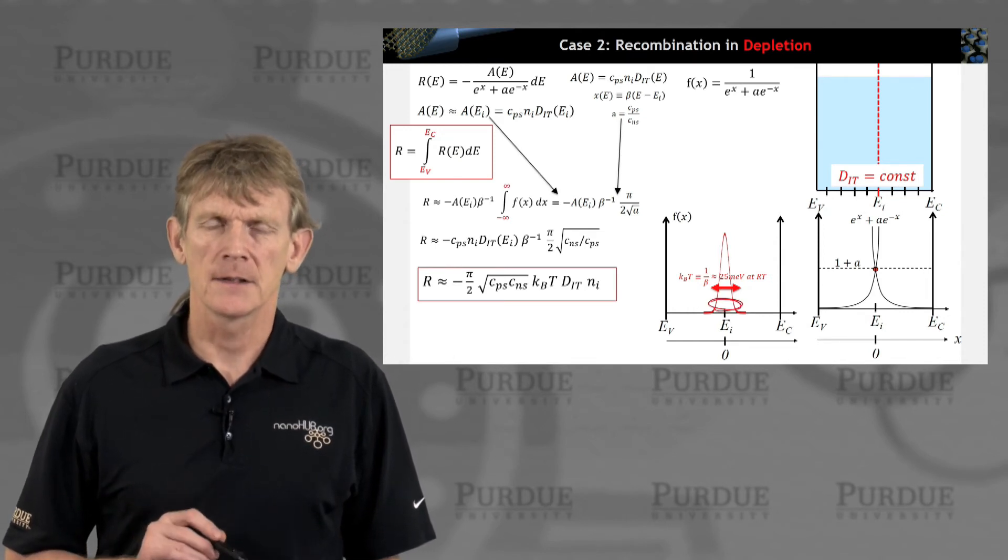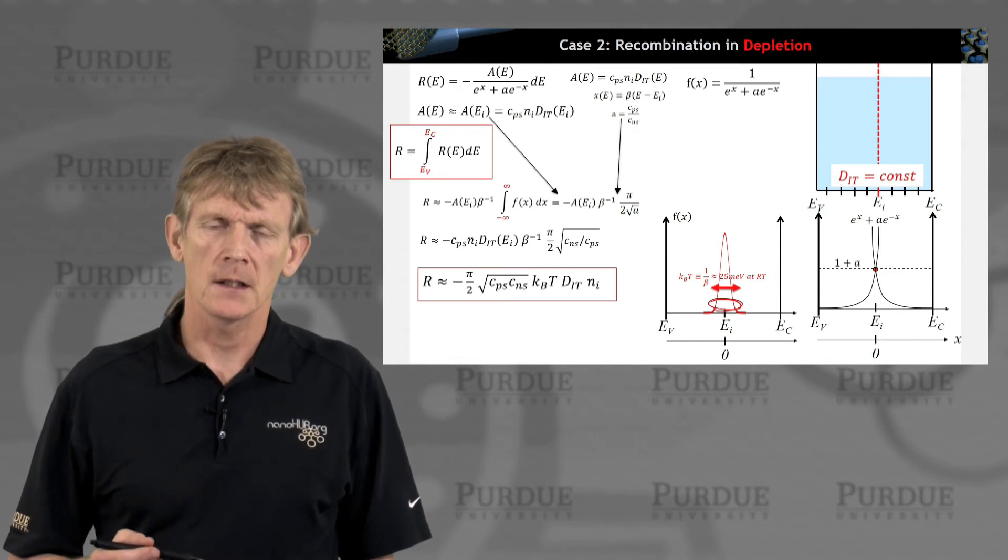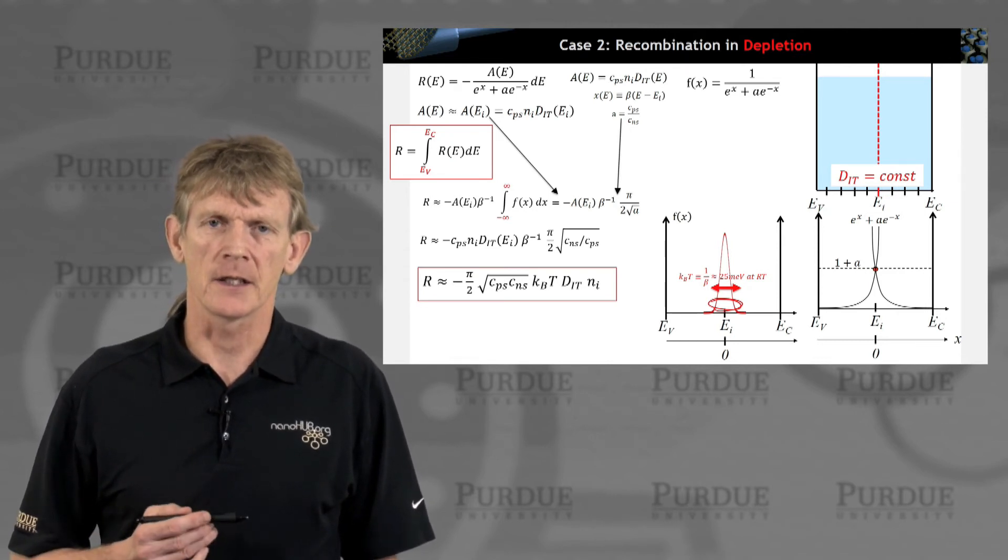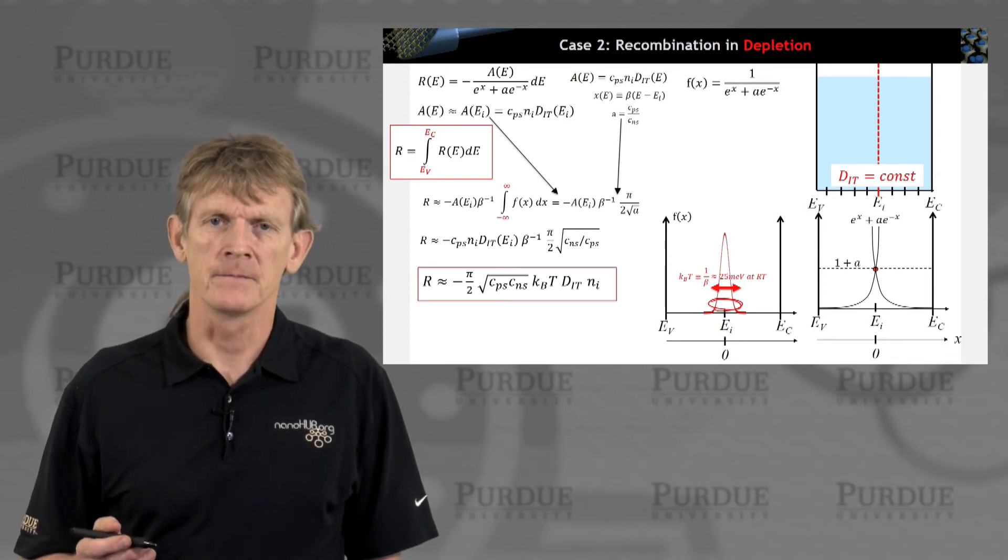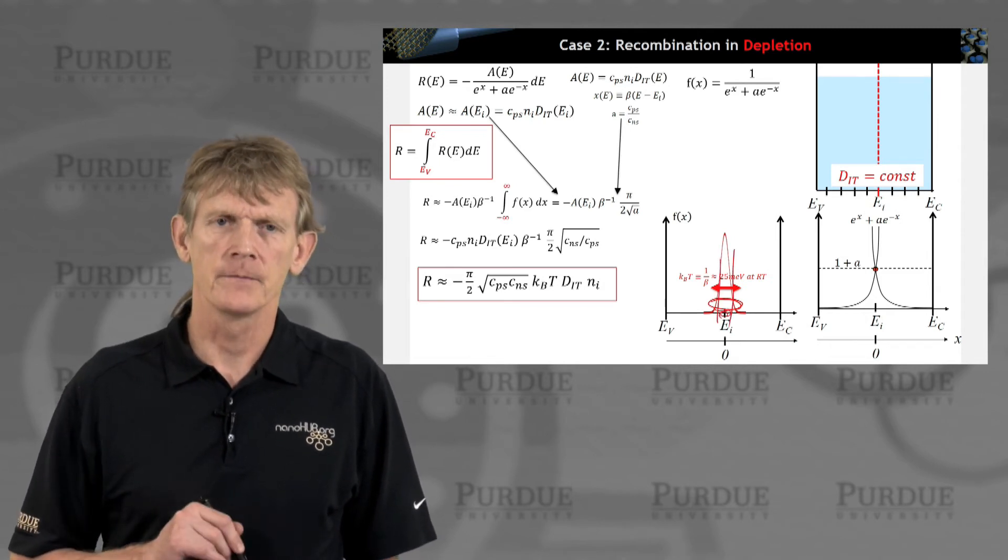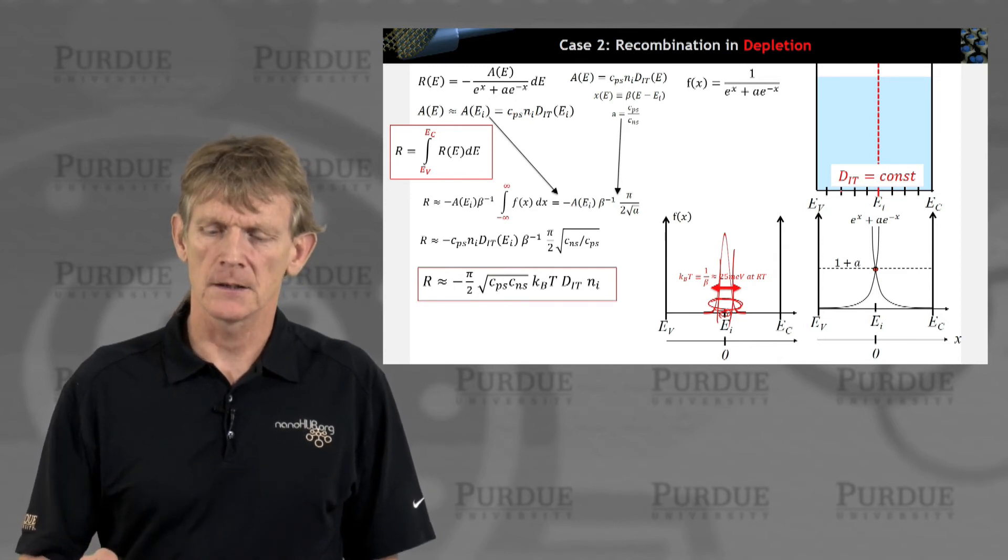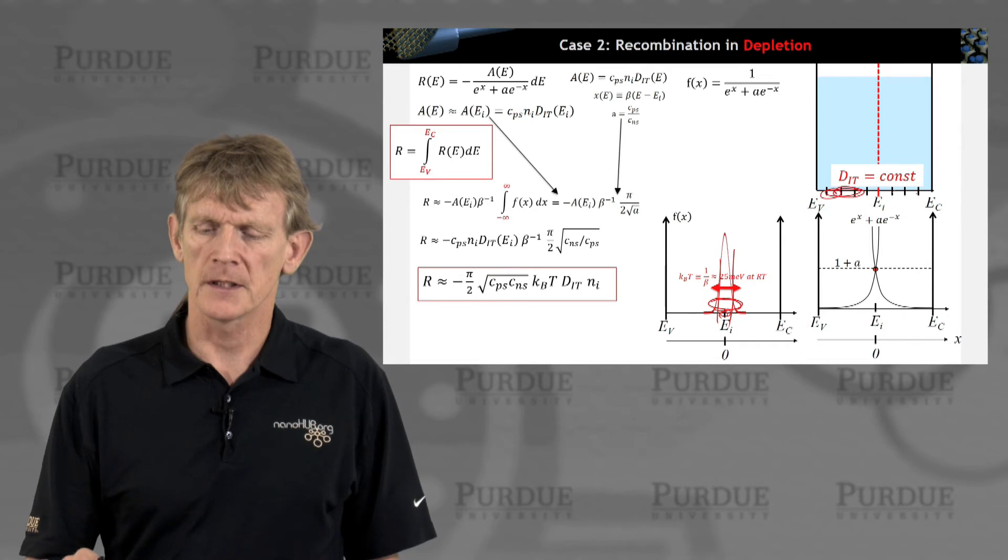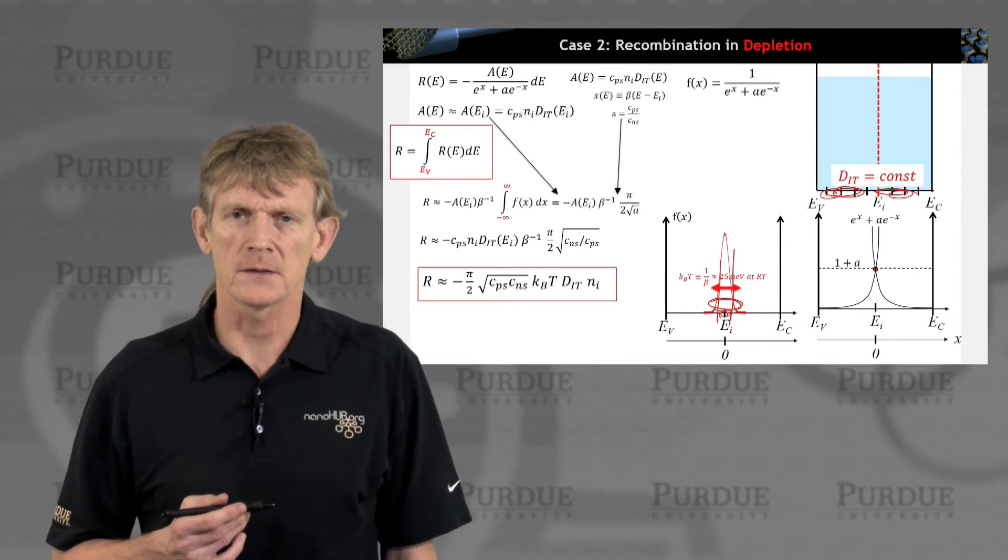We've done a complicated integral and found out that it's really only relevant in a pretty narrow energy range here. That is done by either pure math or some insight that you gain. In this process here, in depletion, only traps that are close to the intrinsic level are relevant in a very narrow energy range.